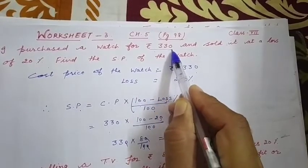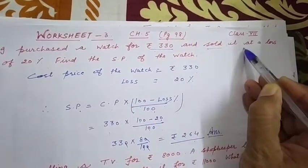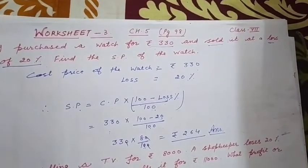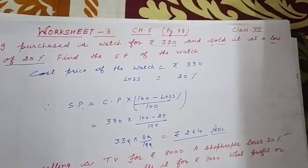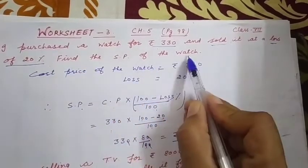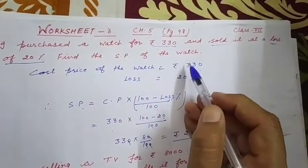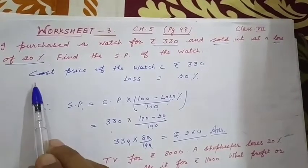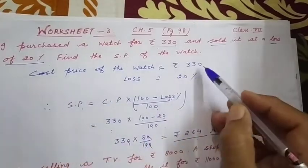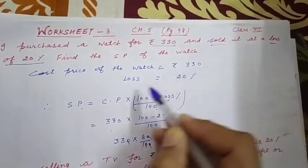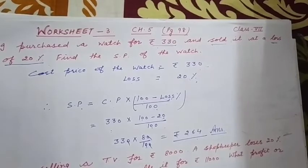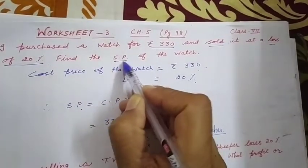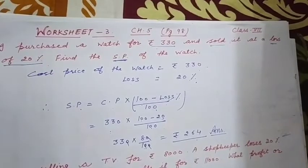Watch को ₹330 में खरीदा गया है और उसे जब बेचा गया तो 20% का loss हुआ। Find the SP of the watch — मतलब उसका selling price क्या है। Cost price ₹330 है और loss 20% है।